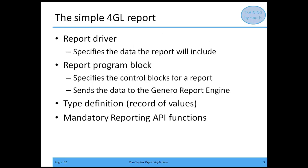To start it off, we're going to look at a simple 4GL report application. This report application is going to have to include a report driver. The report driver specifies the data that's going to be included in the report. It needs to include a report program block, which is going to specify the control blocks of the report and send the data to the Genero report engine. We're going to start with a type definition, setting up a record, and we'll talk about the mandatory reporting API functions needed in the simplest 4GL report application.